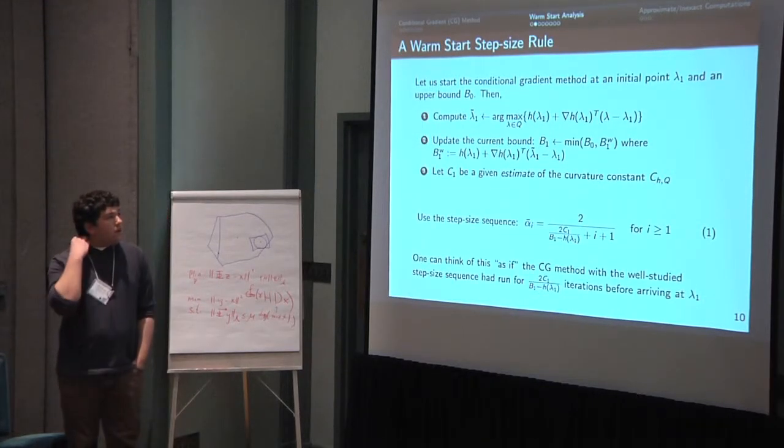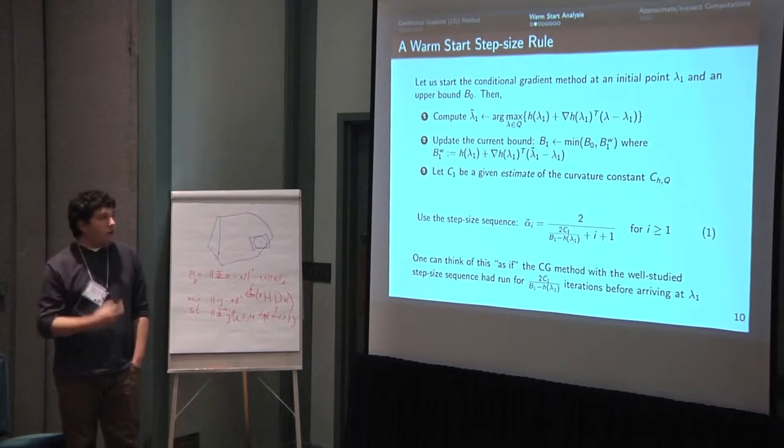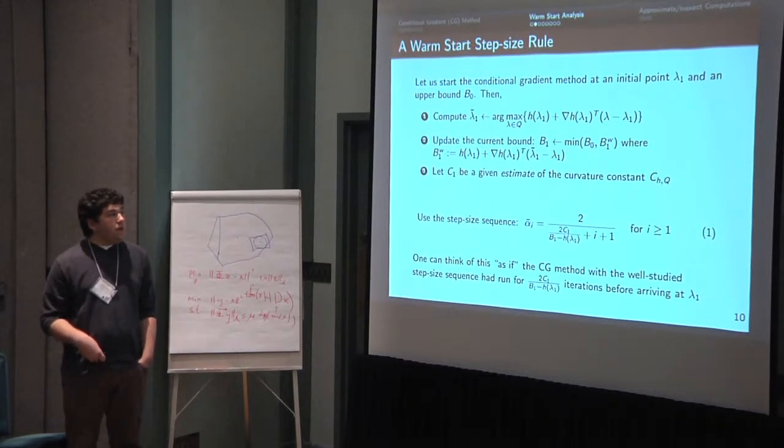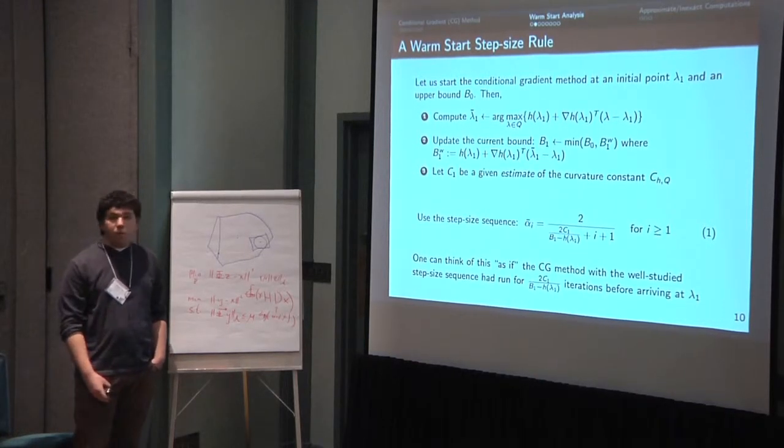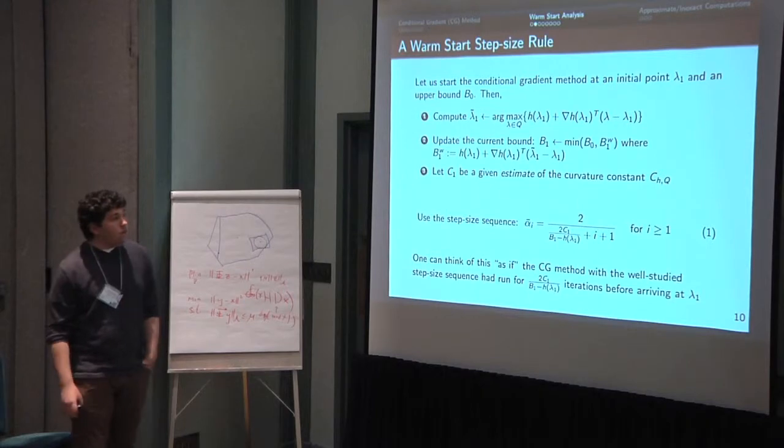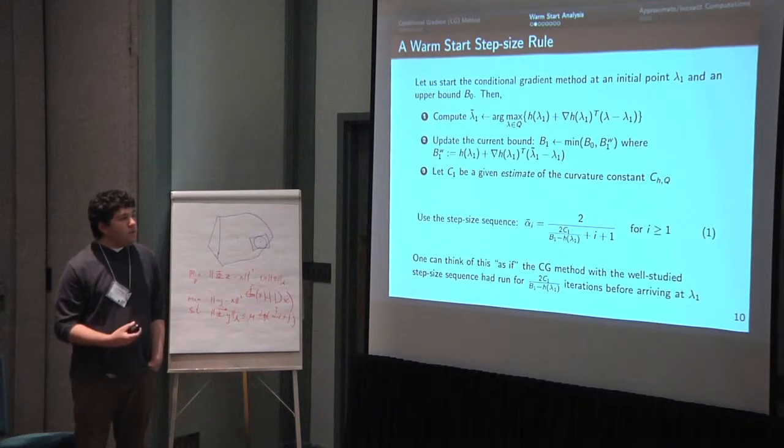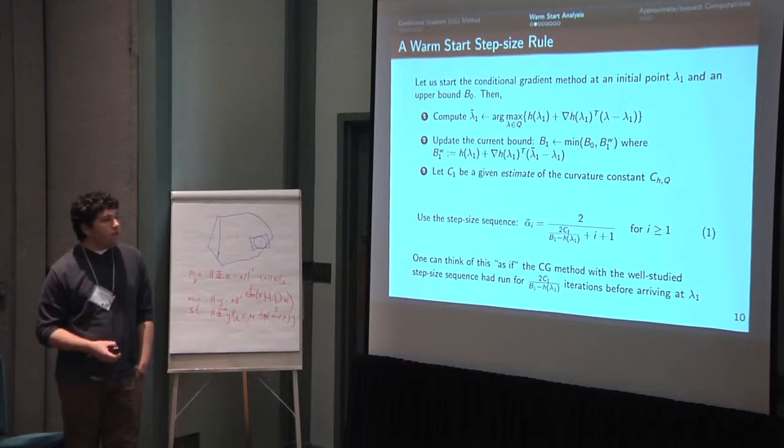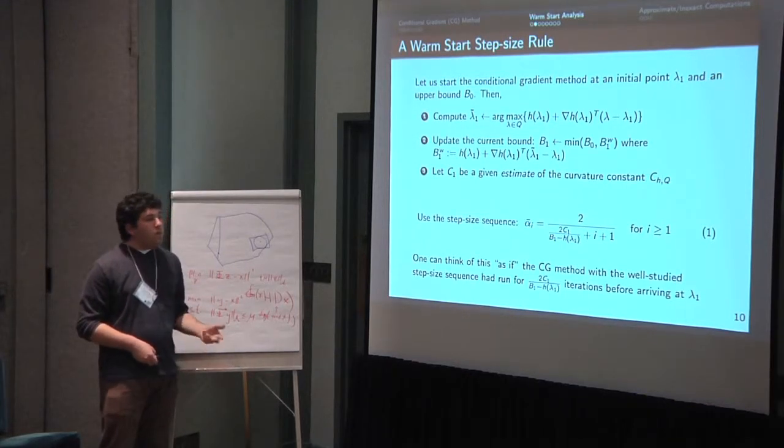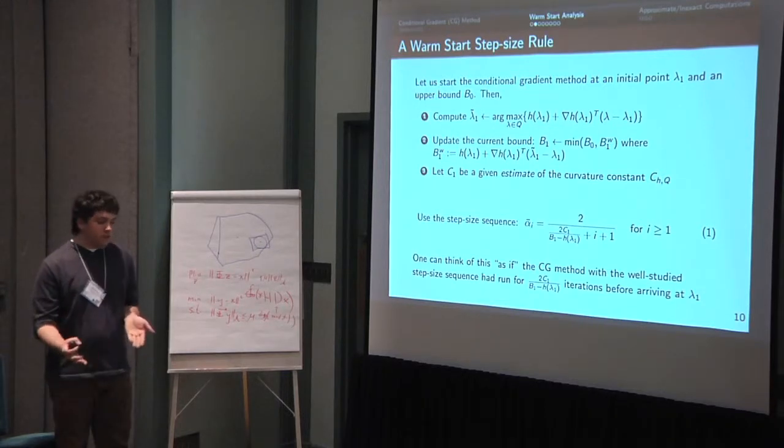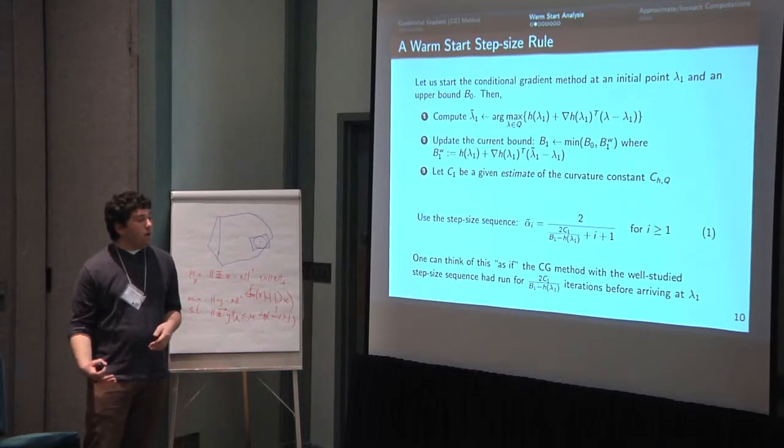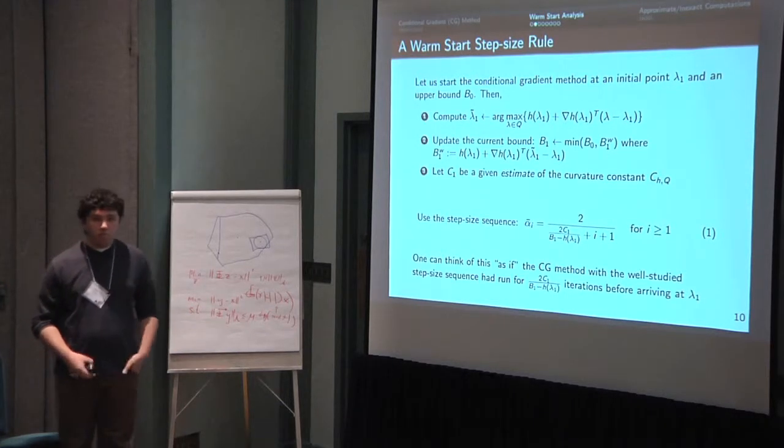So what we look at is how to adapt Frank-Wolf to this setting where maybe we're starting at a nice point. And so how does this work? Well, if you remember what the first iteration of Frank-Wolf looks like, we're starting at an initial point lambda 1 here and an initial upper bound B0, then we compute the extreme point that maximizes the linearization and we update the upper bound. And then for some estimate of the curvature constant, it could be the curvature constant exactly or you just estimate it, then we use the step size sequence which looks like the standard 2 over i plus 2 step size sequence, but now it's actually 2 over this ratio of 2c over the gap plus i plus 1. So you can think about this as if we're restarting the 2 over i plus 2 step size after, if we had actually been running the Frank-Wolf algorithm for 2c 1 over B1 minus h lambda 1 iterations already.